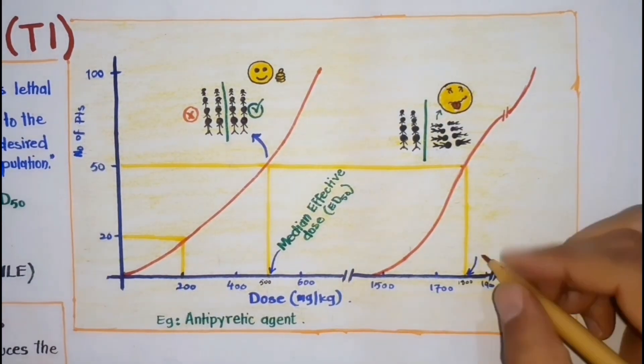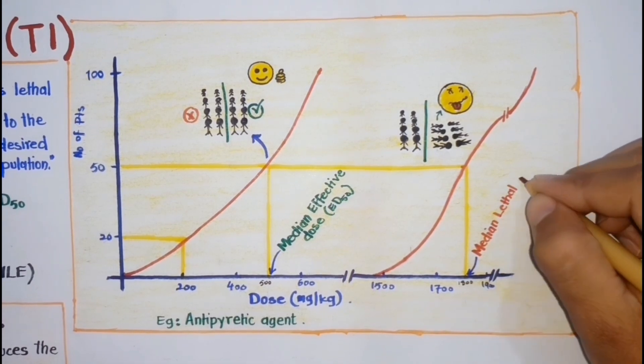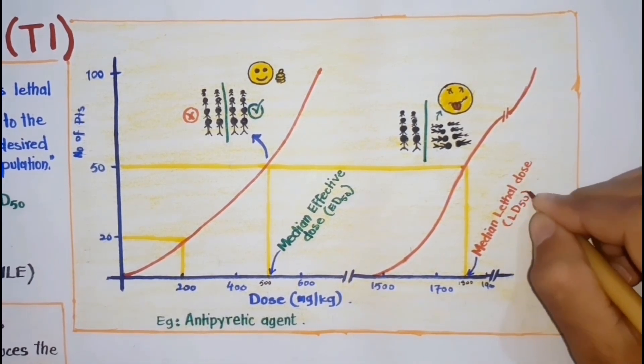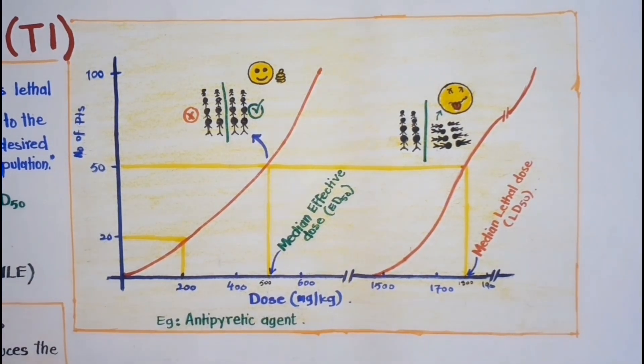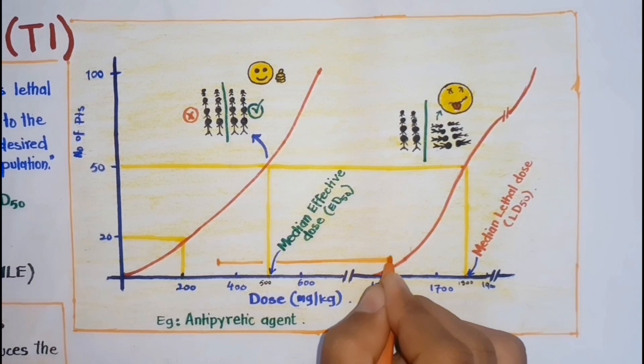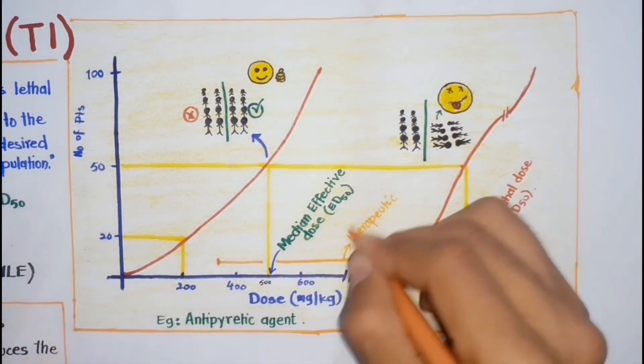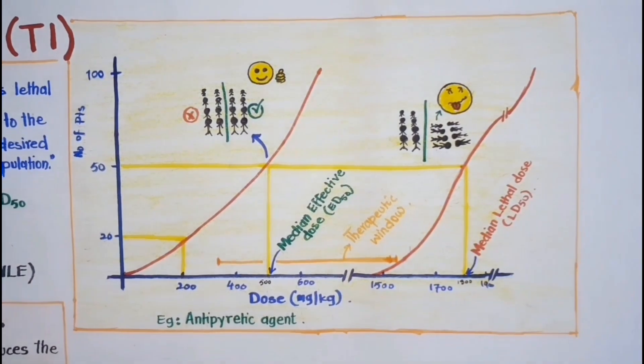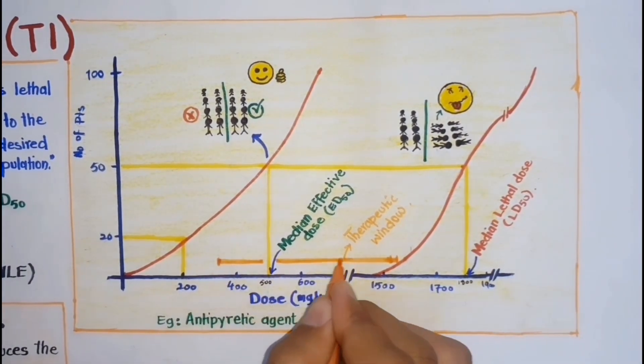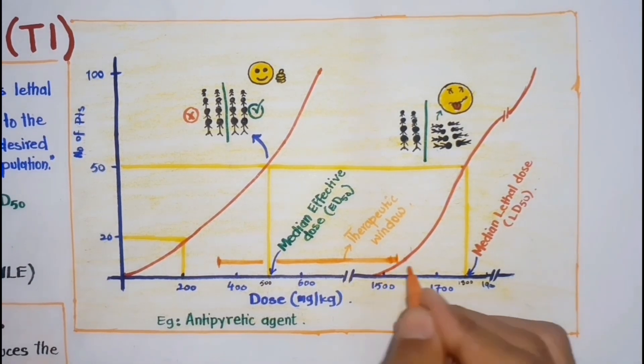Now, this is our LD50 or median lethal dose for this drug. And this is the therapeutic window of this drug. We will discuss about it in another video. But anyway, the larger therapeutic window means the drug is less likely to cause toxicity on therapeutic doses.